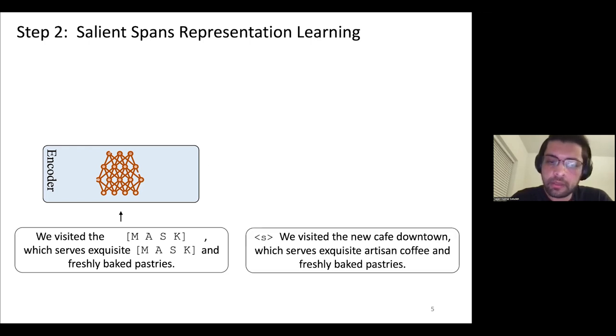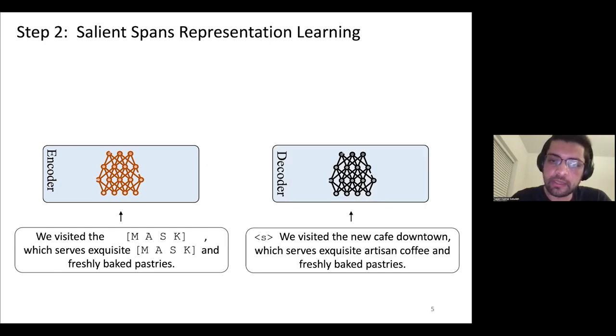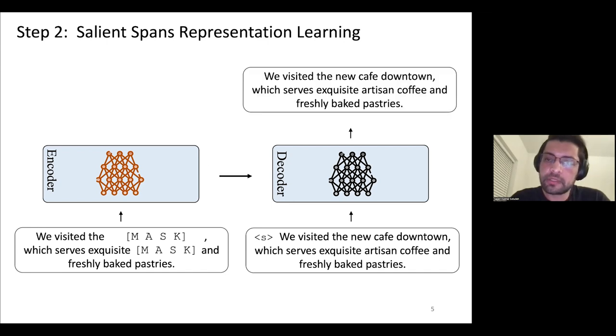Then this input is shifted one to the right and is fed into the decoder for the language modeling task. Then the objective is to predict the masked tokens.